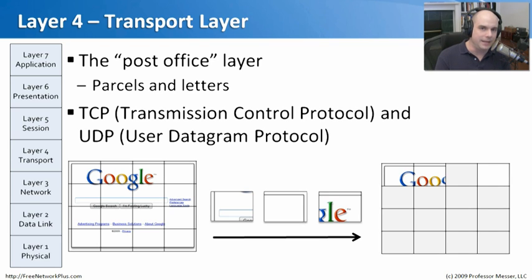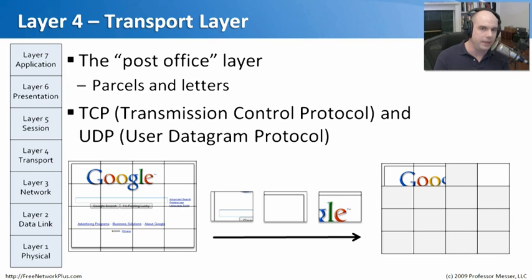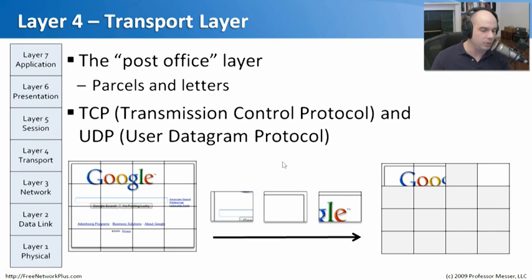Often the data needed is too large to fit in a single frame, so TCP and UDP take that large data, split it into smaller chunks, and send them across the network. For example, loading a Google web page doesn't return a single frame — multiple TCP frames are transmitted and then reassembled on the other side so the final result looks exactly as it started.